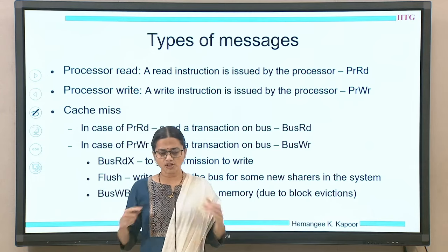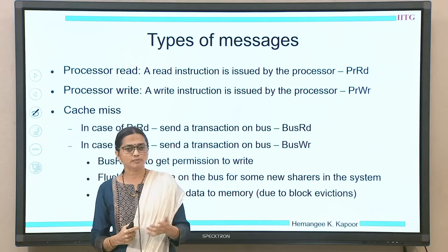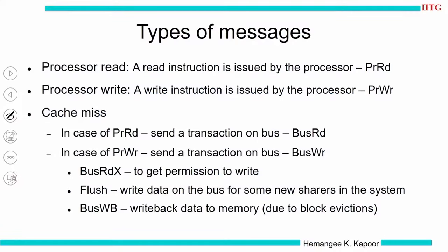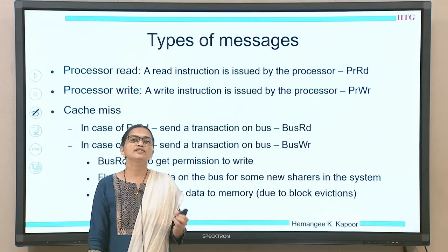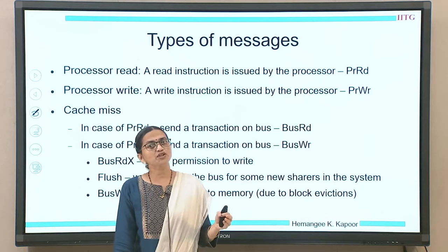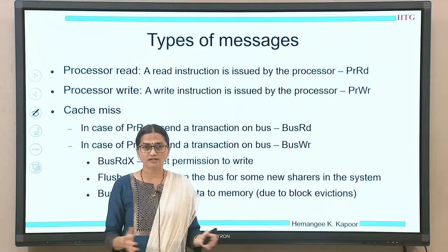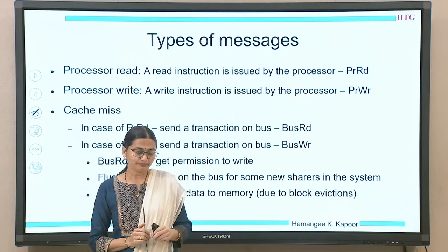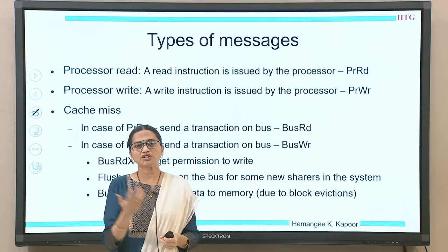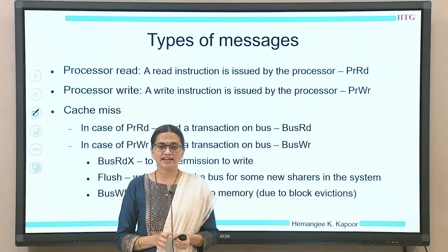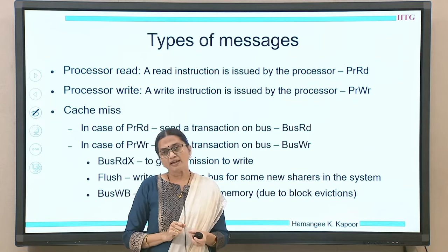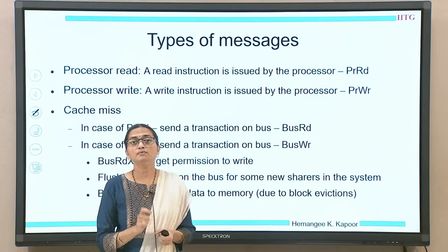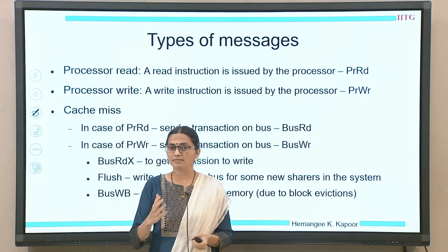Similar to all the protocols, we have a read/write request from the processor. If the request hits, serve it; if it misses on a processor read, this cache needs to fetch the data from the system across other processors. On a processor read, we send a request on the bus to fetch the up-to-date data item. On a processor write, we send a bus write signal, which translates into a bus read-X because we are dealing with an invalidation-based protocol — we want permission to write, similar to the MSI protocol.